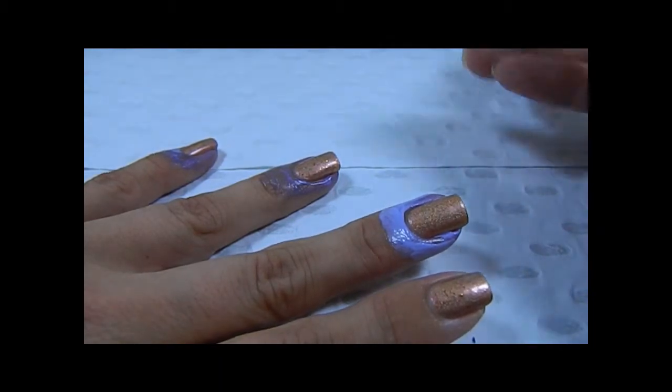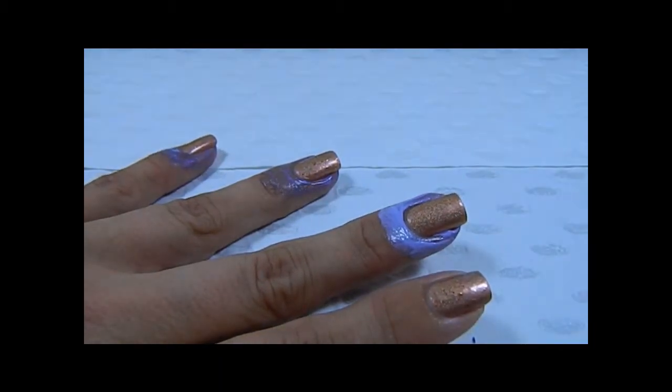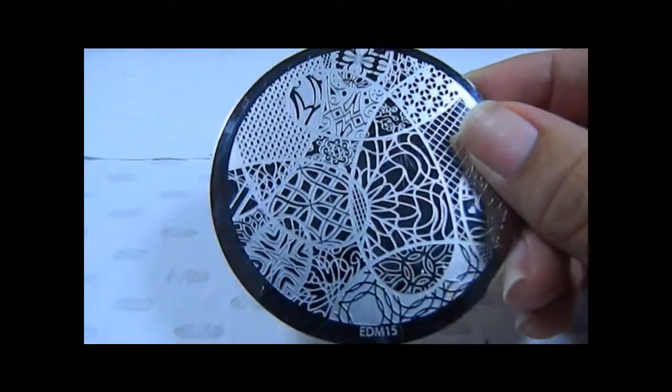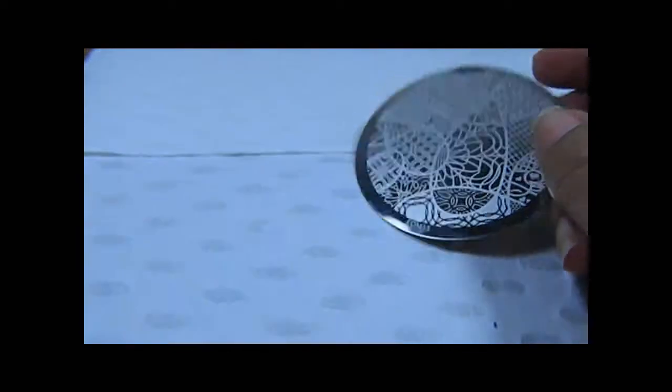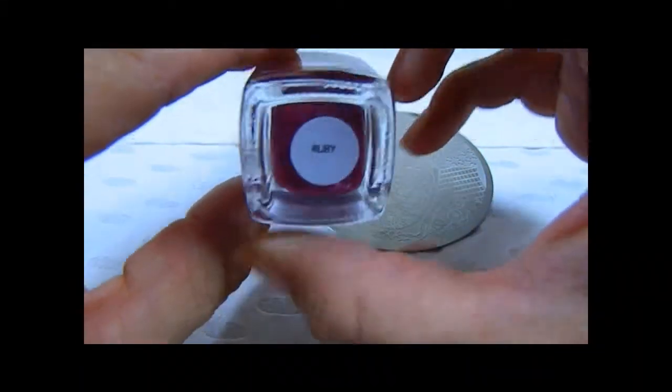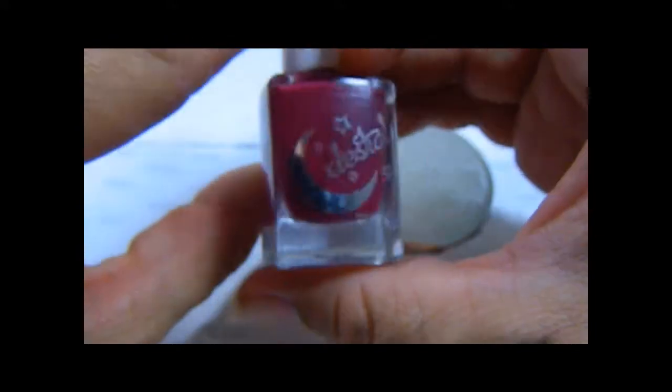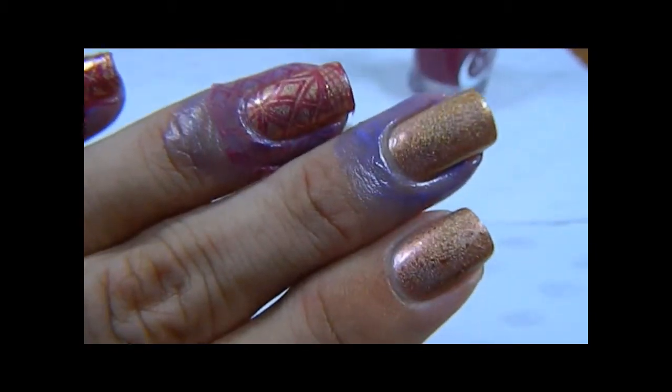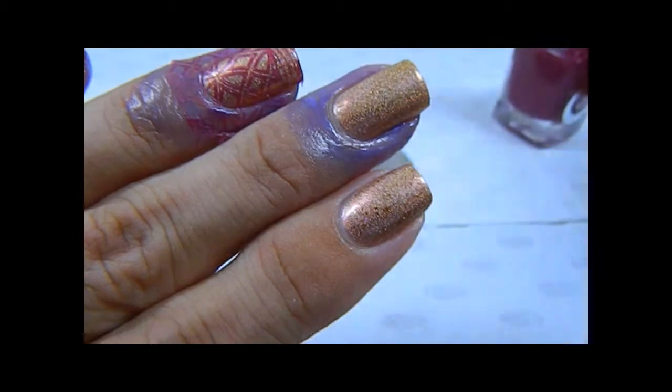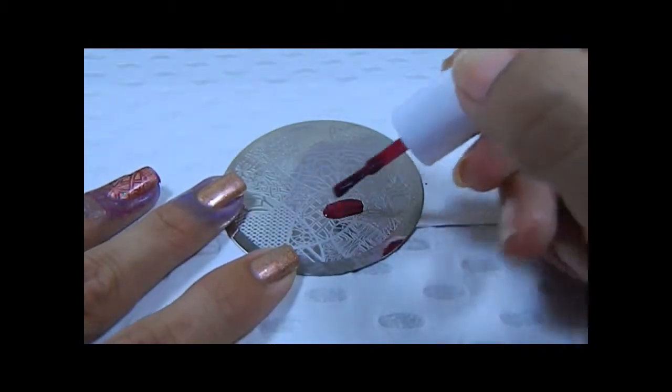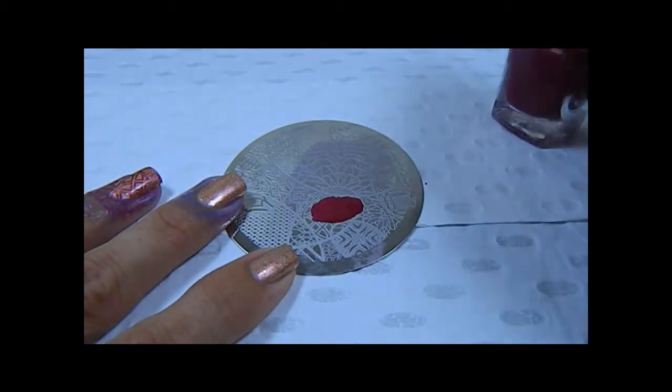To stamp with today I'm using Emily de Molly number 15 plate and Celestial Cosmetics Ruby dark pink stamping polish. So as you can see the latex is nice and dry, it's gone a lighter shade of purple. So I'm just going to place some polish on the plate.